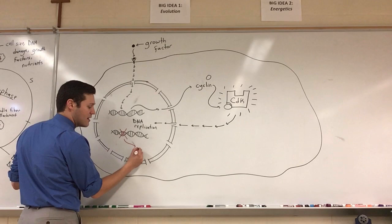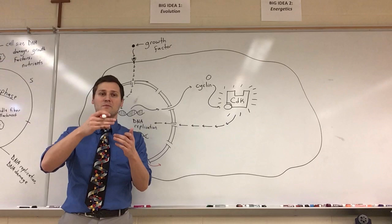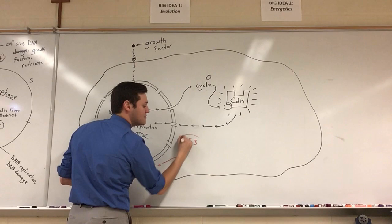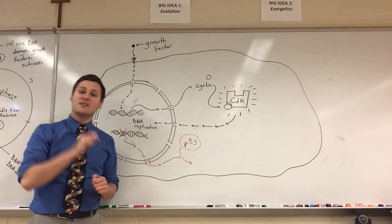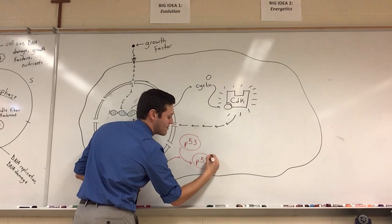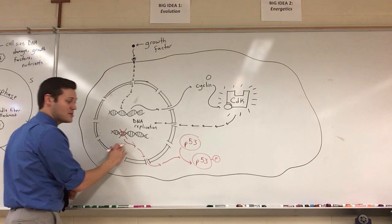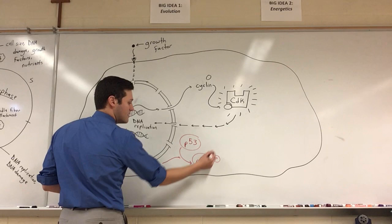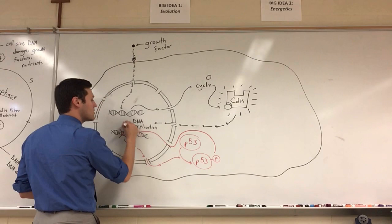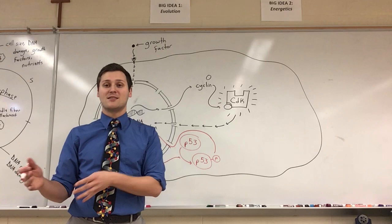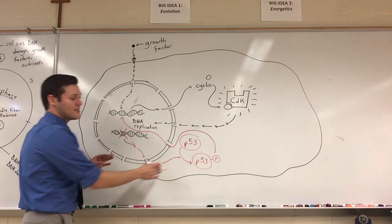So what happens is there's a signal transduction cascade, or a kinase phosphorylation cascade, that leads to this one protein being phosphorylated. And this one protein is P53, which is super important. So P53, if it gets phosphorylated, so let's say we have this P53 that gets phosphorylated, that will tell the P53 that it's time to stop the cell cycle. So let's say the DNA is damaged, we phosphorylate this P53, and the P53 will then serve as what's called a transcription factor. It will bind to DNA and initiate the production or the expression of certain other proteins to carry out certain cellular processes.